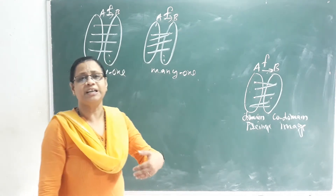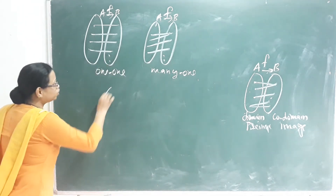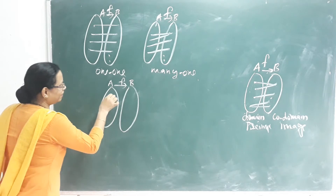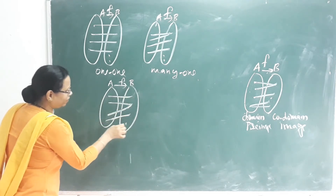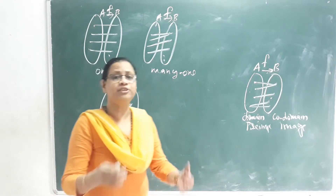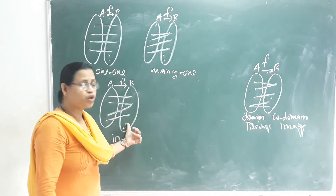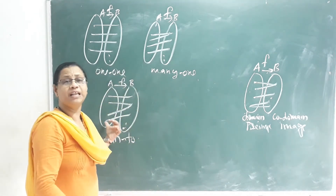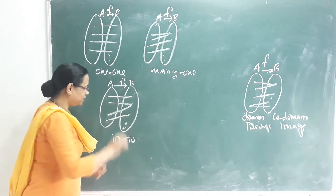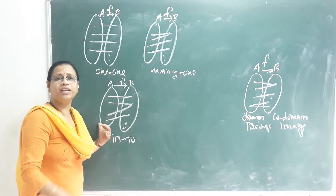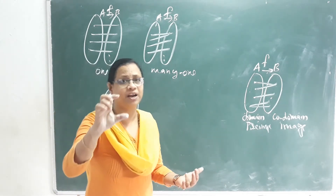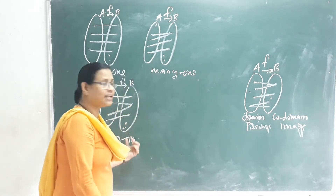There are also two further categories: Into and Onto. Consider a function from A to B. If there are elements in the co-domain B that have no corresponding pre-image in A, then we call it an Into function. Some elements in the co-domain are not covered.